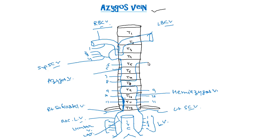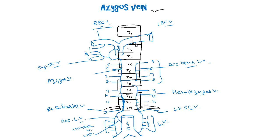Above that we have the accessory hemi-azygous vein, which will receive the 5th, 6th, 7th, and 8th posterior intercostal veins, draining into the azygous vein. Similarly on the left side, the second, third, and fourth intercostal veins join to form the superior intercostal vein, draining into the left brachiocephalic vein. The first will directly drain into the left brachiocephalic vein.